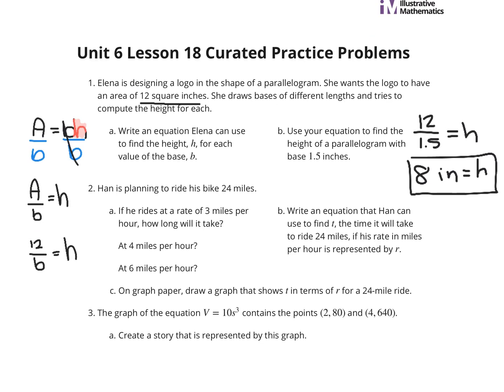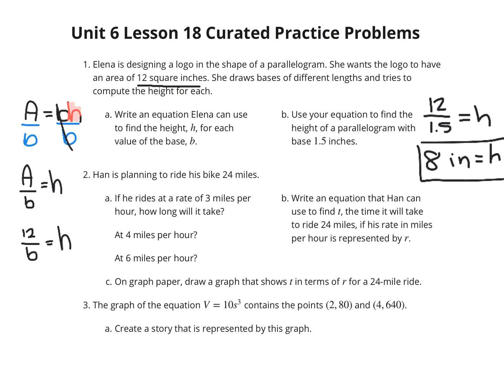Han is planning to ride his bike 24 miles. If he rides at a rate of 3 miles per hour, how long will it take? Well, 24 divided by 3 equals 8 hours. At 4 miles per hour, 24 divided by 4 equals 6 hours. At 6 miles per hour, 24 divided by 6 equals 4 hours.